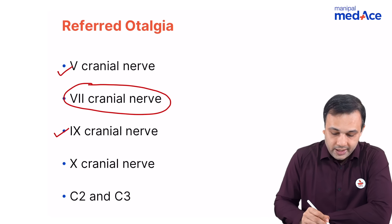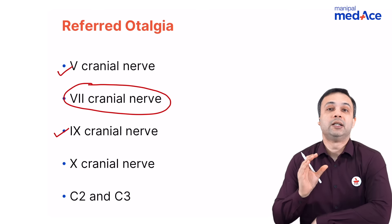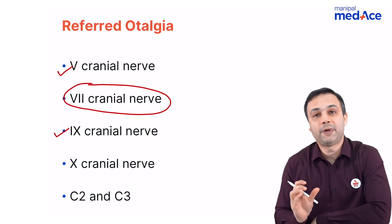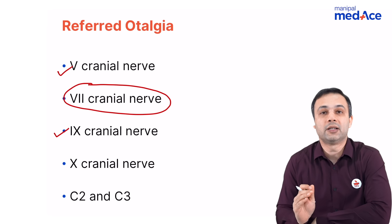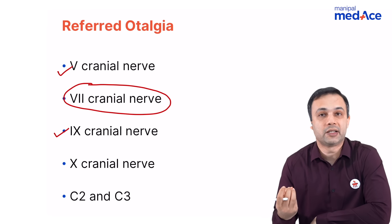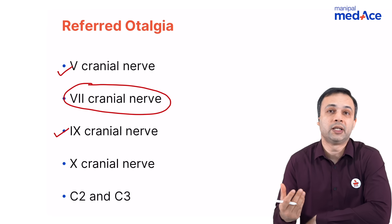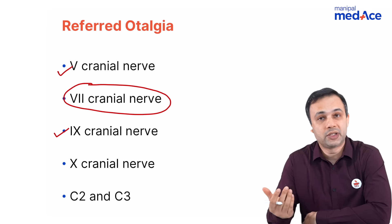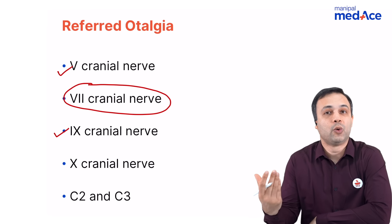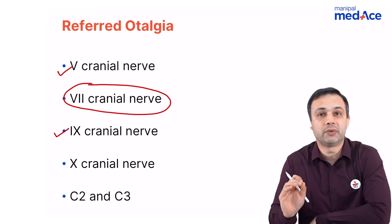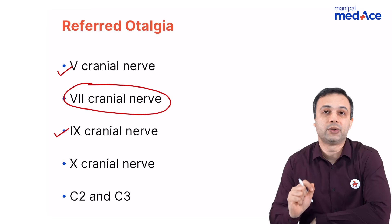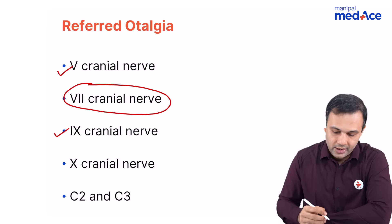When we talk about the ninth nerve, disorders in the oropharynx — that is, any disorder in the tonsil — can include the elongated styloid process, tumors of the tonsil, lesions in the posterior pharyngeal wall, or in the oropharynx. All these disorders will produce referred otalgia through the ninth cranial nerve.